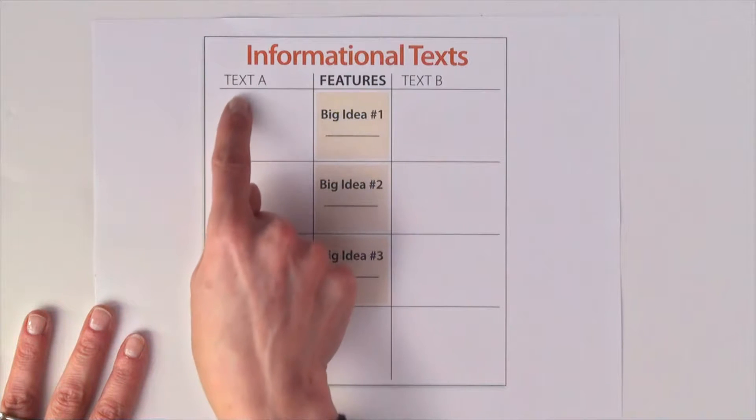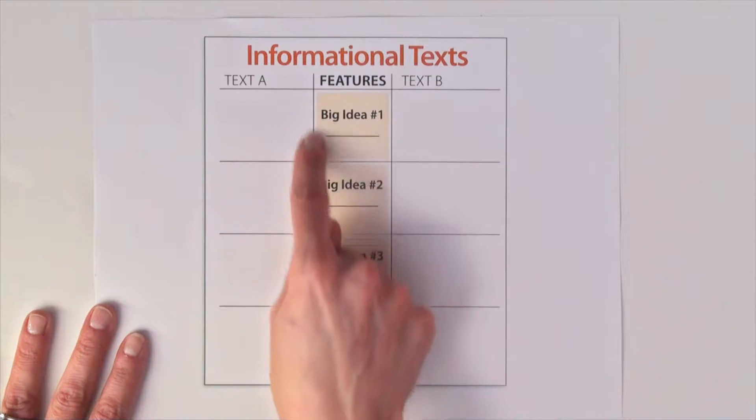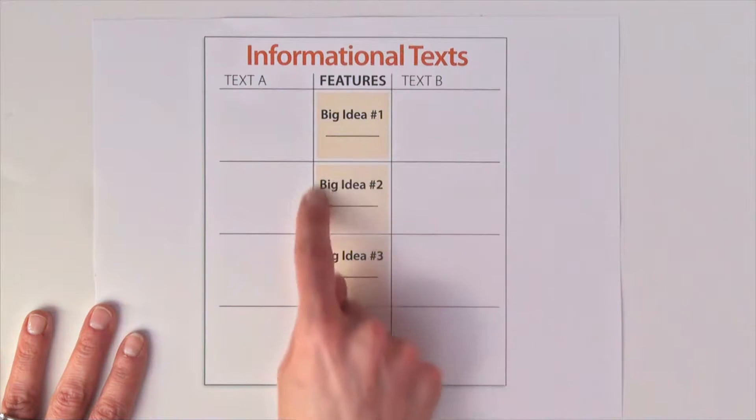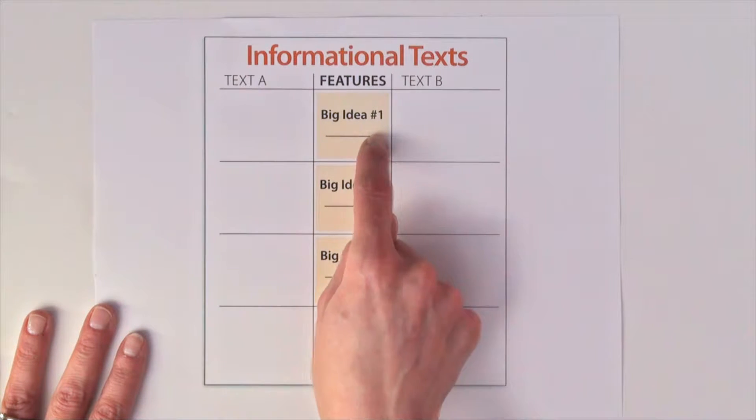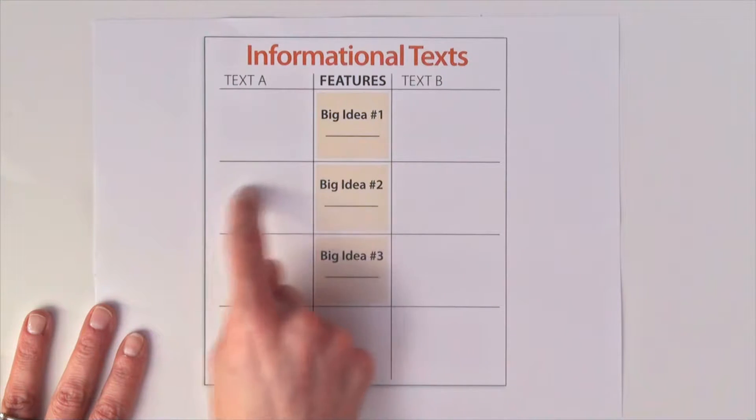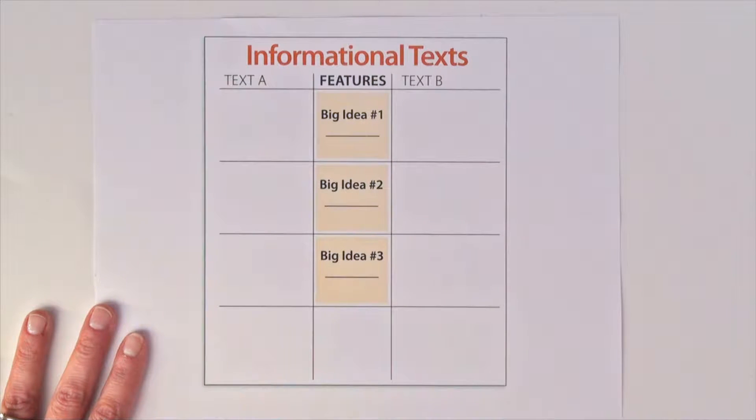Now, if the two texts that students have to compare are not literature but nonfiction, then the facets of comparison will be different and they'll be a little more vague. You see, you have to actually read the text to determine their big ideas. While reading Text A, the students are listening for big ideas or concepts that are revealed, and as they are, they make a note of them listing specific details, facts, and information for each.